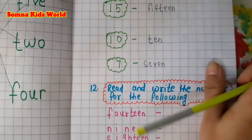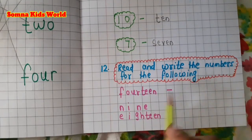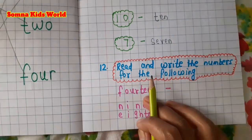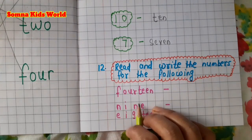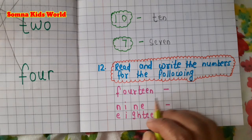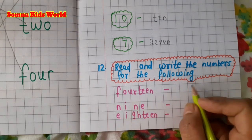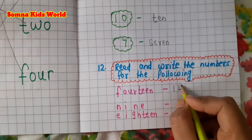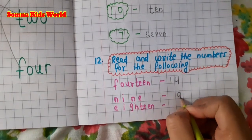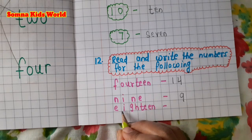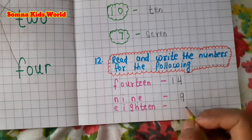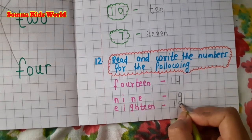Next is: read and write the numbers. Number names are given and kids write the numerals. For example, 'fourteen' — write 14. 'Nine' — write 9. 'Eighteen' (E-I-G-H-T-E-E-N) — write 18.